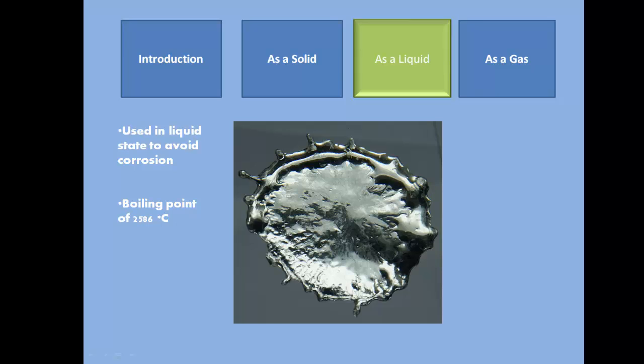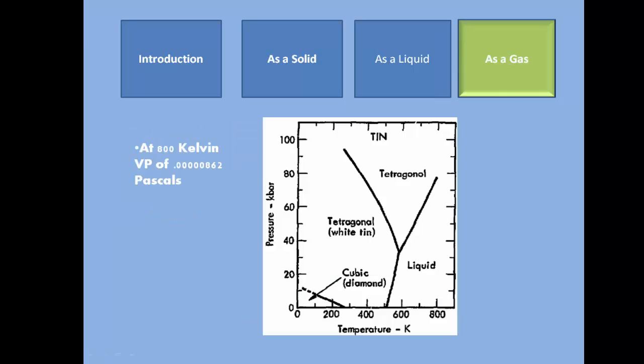Tin has a boiling point of 2,586 degrees Celsius. As a gas, tin has a vapor pressure of 8.62 times 10 to the negative 6 pascals at 800 Kelvin.